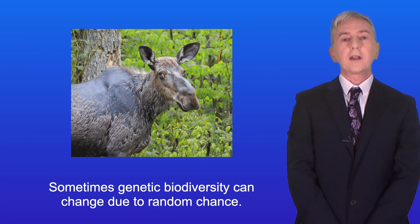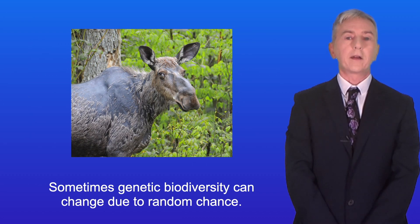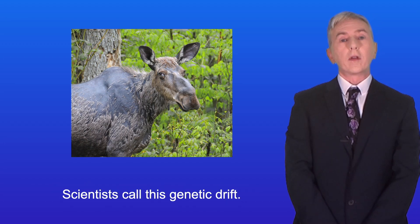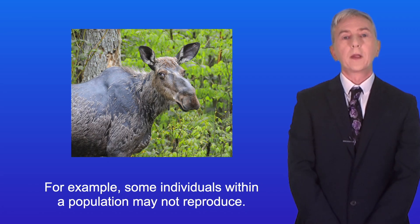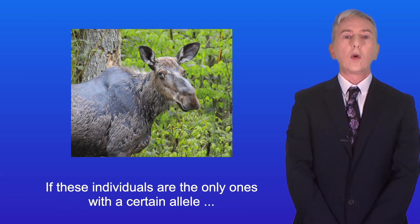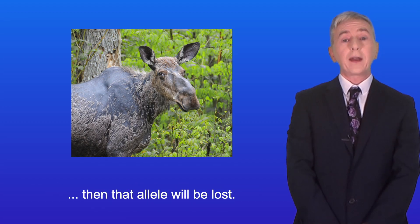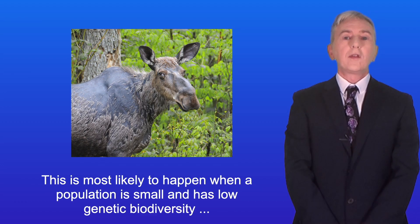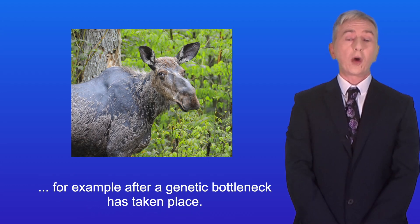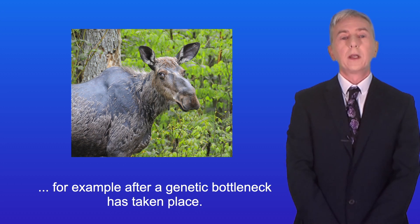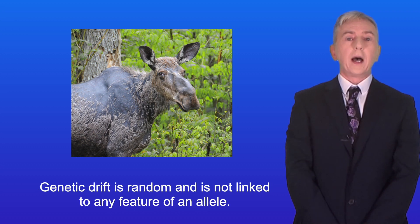Sometimes genetic biodiversity can change due to random chance — scientists call this genetic drift. For example, some individuals within a population may not reproduce, and if these individuals are the only ones with a certain allele, then that allele will be lost. This is most likely to happen when a population is small and has low genetic biodiversity, for example after a genetic bottleneck has taken place. Genetic drift is random and is not linked to any feature of an allele.